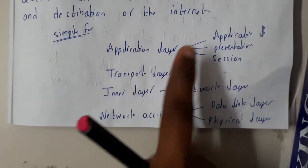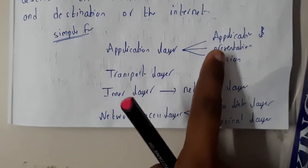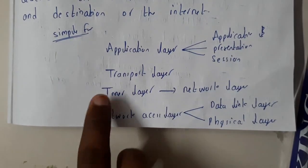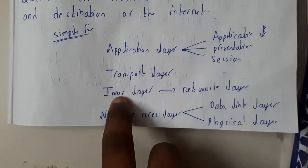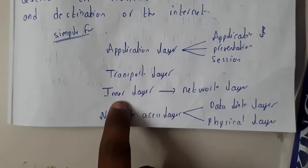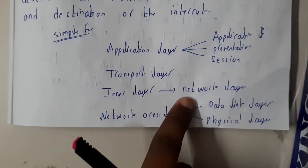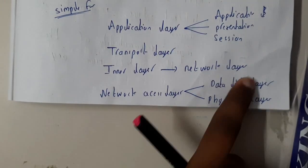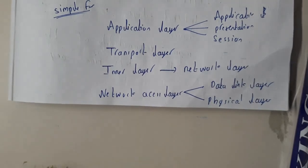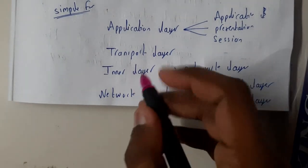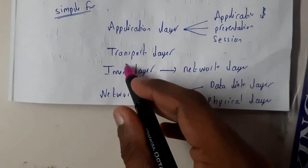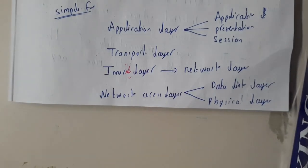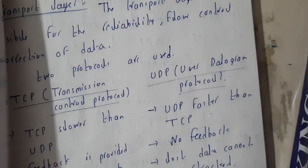In the simplified diagram: the application layer contains the OSI application, presentation, and session layers; transport layer contains the transport layer; internet layer contains the network layer; and network access layer contains the data link layer and physical layer.